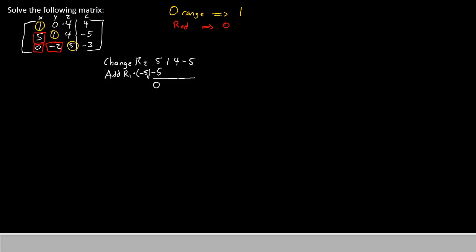But we have to multiply the negative 5 times every element in row 1. Negative 5 times 1 gives negative 5. Negative 5 times 0 gives 0. Negative 5 times negative 4 gives 20. And negative 5 times 4 gives negative 20. Let's add them up. 5 minus 5 is 0, 1 plus 0 makes 1, 4 plus 20 makes 24, and negative 5 minus 20 makes negative 25. This will be our new row 2.